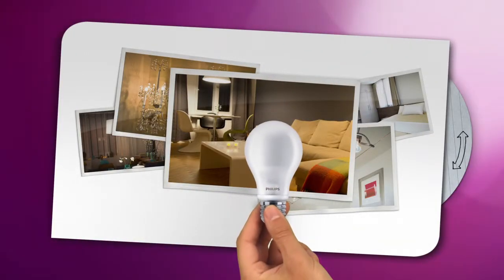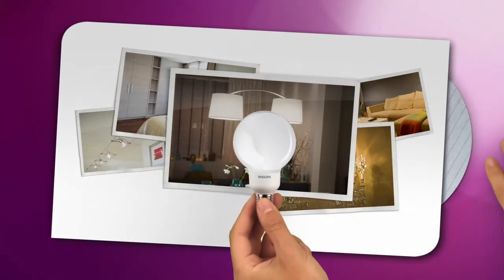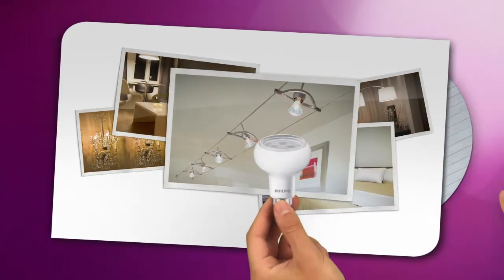Besides the familiar A-shaped bulb for general purposes, there are decorative candles, lusters, and globes for light fixtures where you can see the bulb, and also spots and reflectors that direct light exactly where you need it.